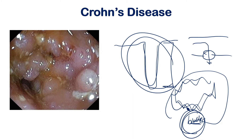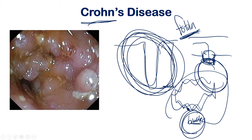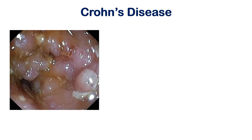One nearby structure is the bladder. If the intestinal wall is fully eroded, it can damage through the bladder wall and form an opening — a connection between the intestine and bladder. This allows fecal matter and other intestinal contents to enter the bladder, and the patient will urinate that out. This is called a fistula — an abnormal connection between two tubes or areas of the body. Fistulas happen only in Crohn's disease, not ulcerative colitis, because Crohn's goes through all four wall layers.